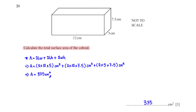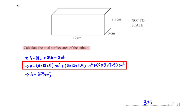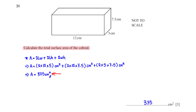Calculate the total surface area of the cuboid. Using the formula for the total surface area of a cuboid, the length l is 12 cm, the width w is 5 cm, and the height h is 7.5 cm. When we plug in these values and type this into the calculator, we get 375 cm squared.